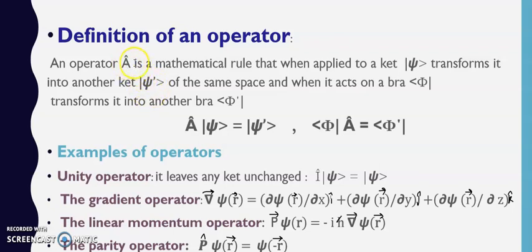Prime - ye operator jo hai is ket pe apply hone ke baad isko doosre ket mein change kar deta hai jisei hum yaha pe psi prime bol rahe hain of the same space, usi space mein jo ki hum Hilbert space bolte hain. And when it acts on a bra phi, transforms it into another bra.